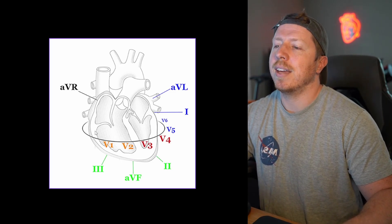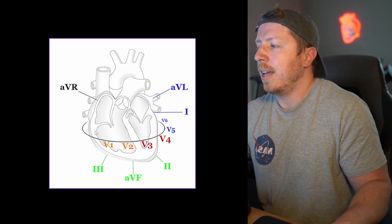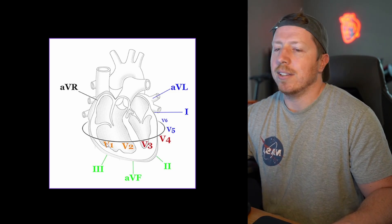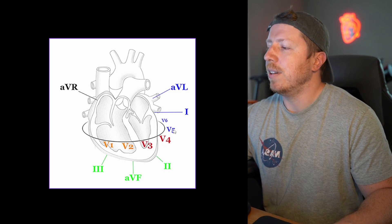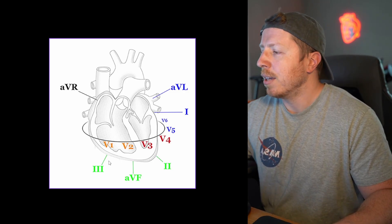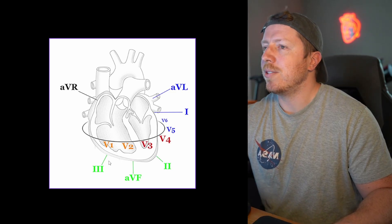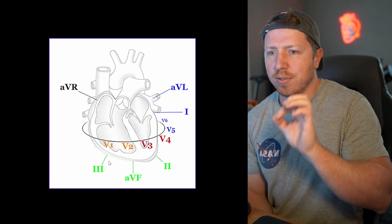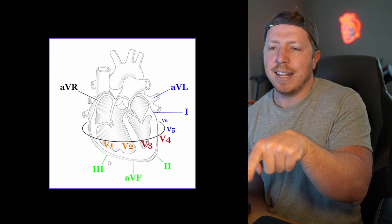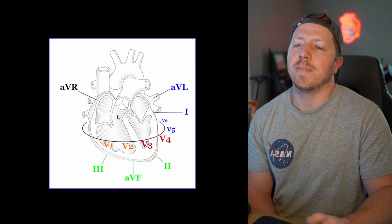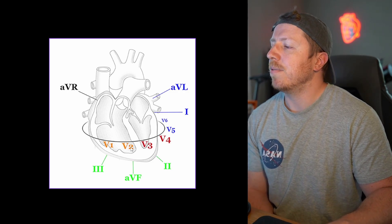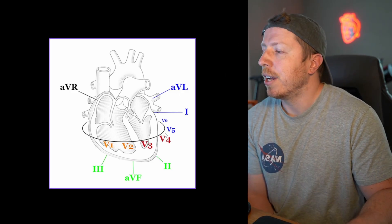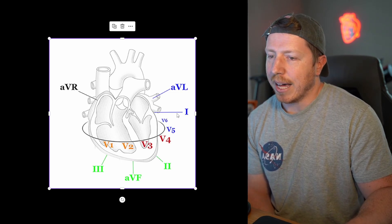The V leads go in order: V1, V2, V3, V4, V5, and V6. Think of an imaginary rod from where the electrode is for each V lead, going straight through the chest — wherever it hits the heart is where that lead is looking. V1 and V2 look at the septal area, V3 and V4 are more anterior, and V5 and V6 are lateral.